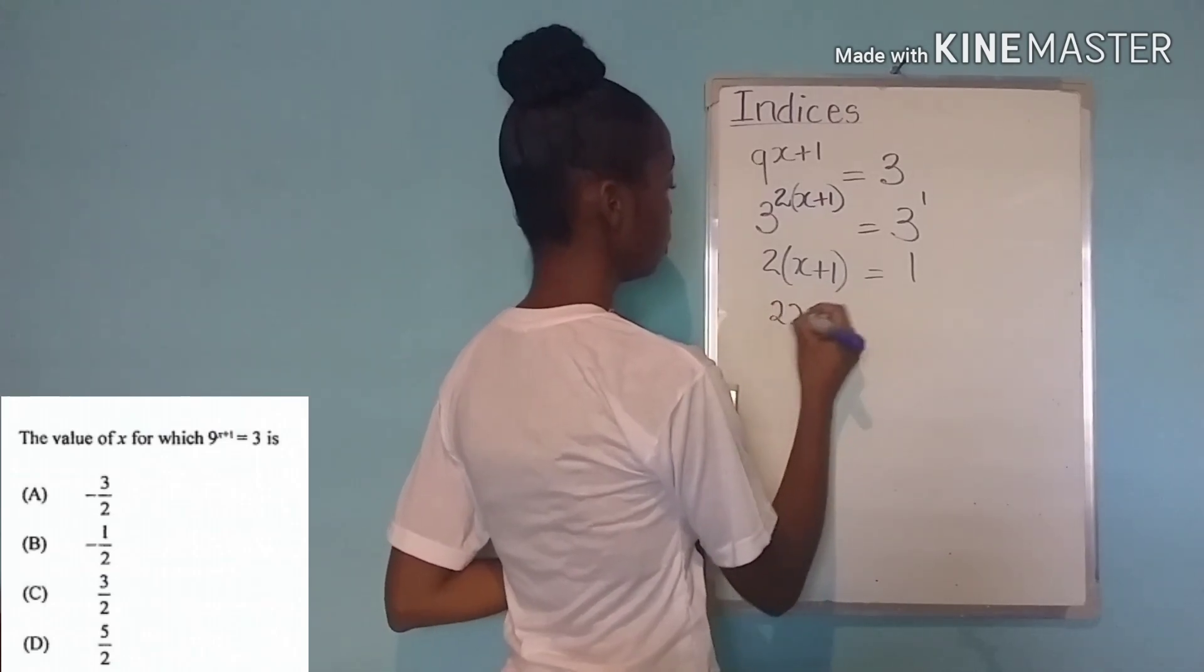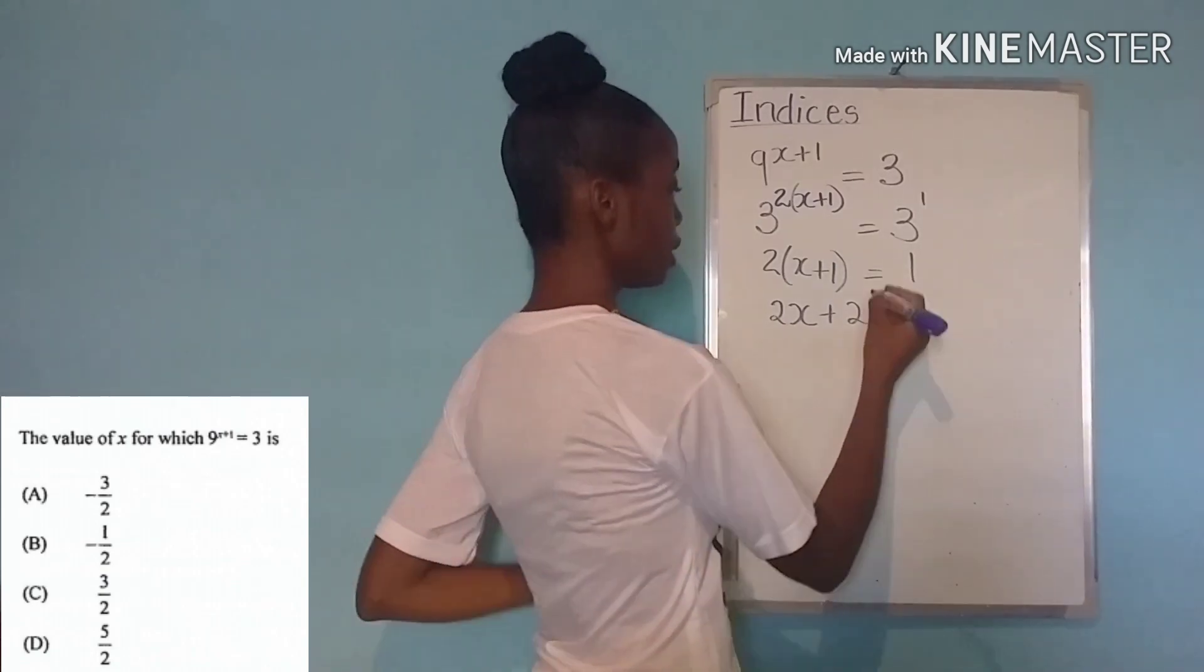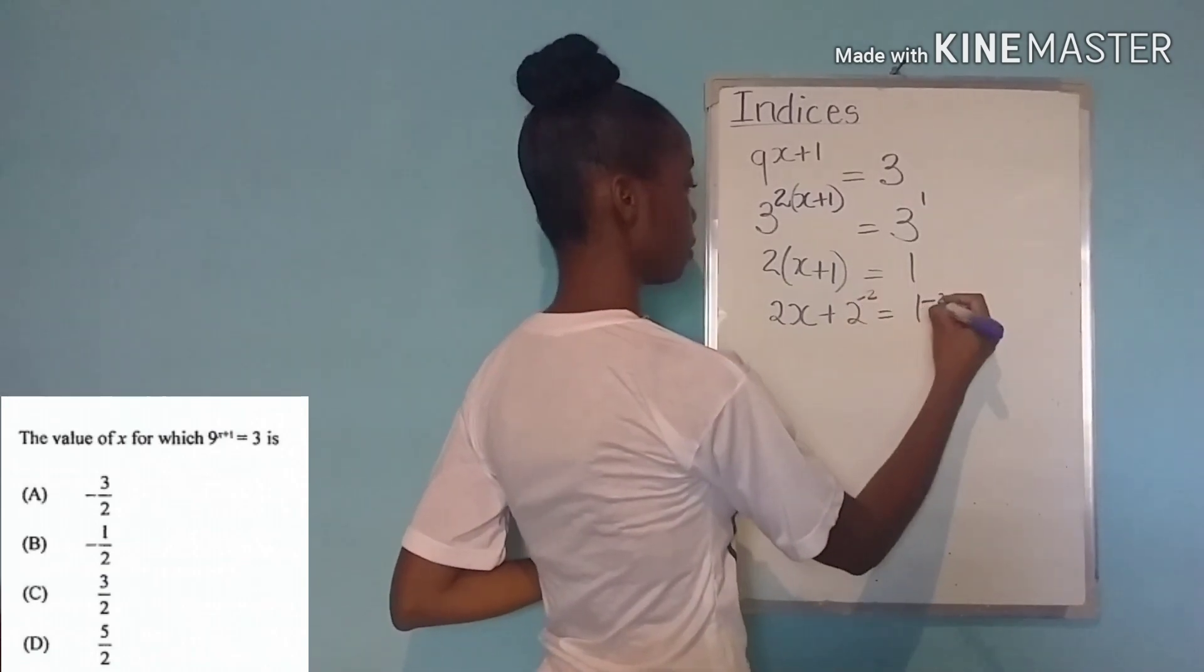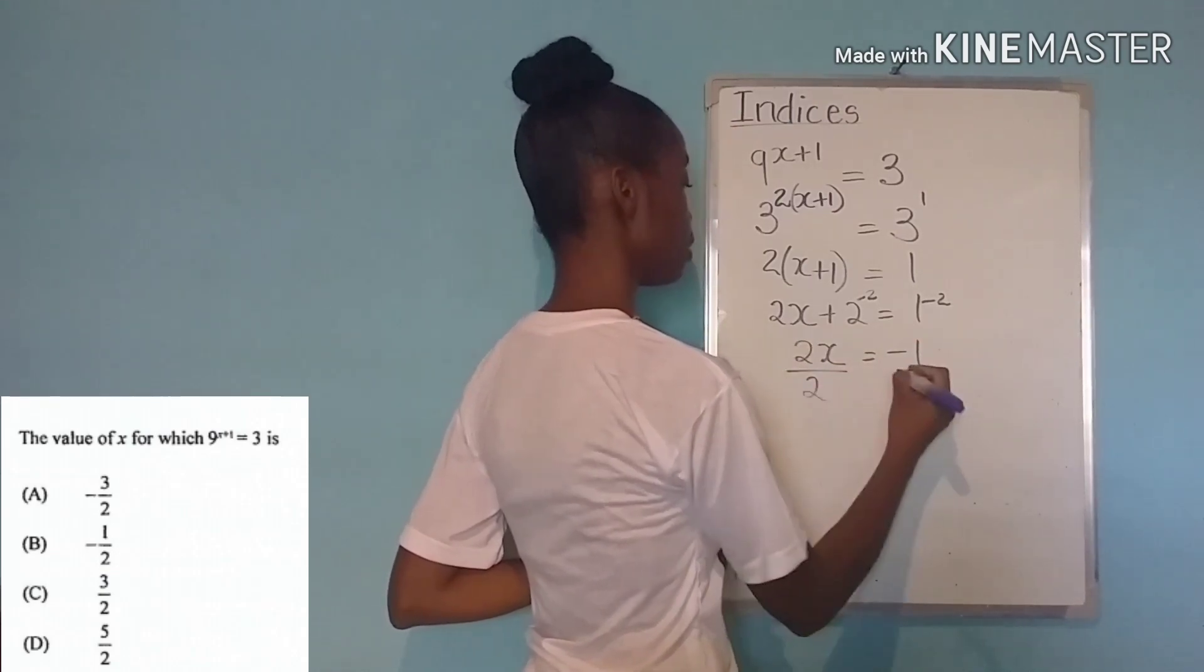We expand 2x plus two is equal to one. Subtracting two from both sides we end up with 2x is equal to negative one dividing both sides by two. x equals negative one half.